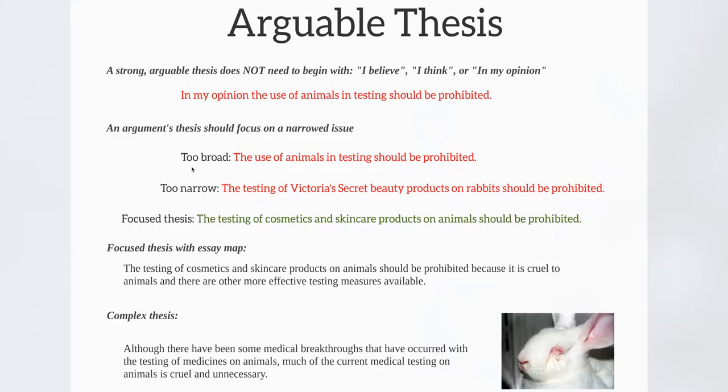If you were to choose something like animal testing, the thesis 'The use of animals in testing should be prohibited' is too broad. A reader would ask: what kind of testing? Which animals? Does that mean all animals, all kinds of testing — medical, cosmetic, prescription? So I'd want that to be more focused. On the other hand, 'The testing of Victoria's Secret beauty products on rabbits should be prohibited' is too narrow — it's limited to one brand and one animal, and you probably won't find enough research on that specifically.